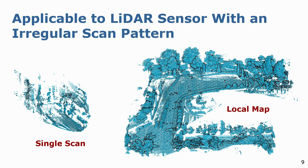One of the key impacts of such a local map-based approach towards loop closure detection is when working with LIDARs having irregular scan patterns with limited field of view and density. Here we show a single scan from the Livox AVIA LIDAR, which is not easily interpretable even for a human and is equally difficult to extract meaningful features for place recognition. However, when we generate a local map from the same scanner at the same location, we can observe the structure of the environment more clearly, allowing us to detect reliable features even from such challenging scan patterns.